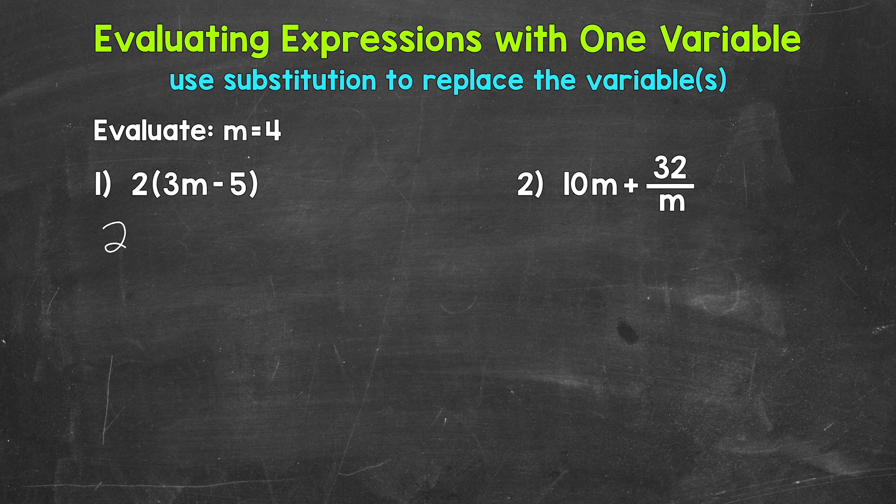So let's plug in 4 for m and rewrite this expression. So we have 2 parentheses, and remember this means 2 times whatever we get within the parentheses, 3m, which means 3 times m, so 3 times, and then m equals 4, so plug that 4 in, minus 5.